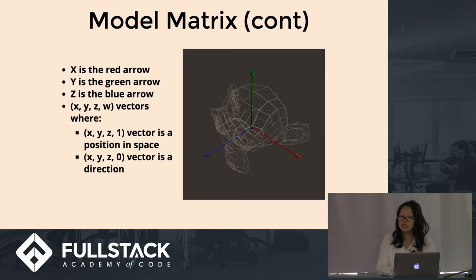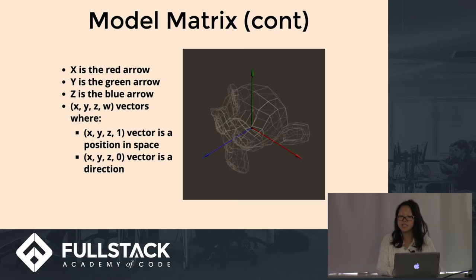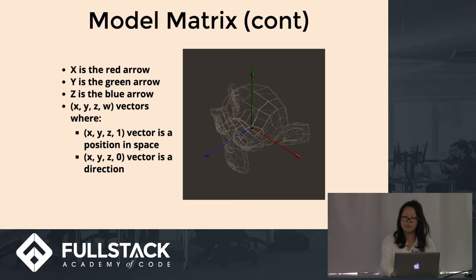For 3D graphics, we will now have X, Y, Z, and W vectors. The main point is that an X, Y, Z, 1 vector is a position in space, and an X, Y, Z, 0 vector is a direction.